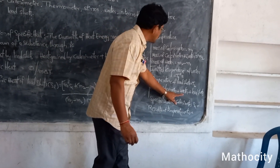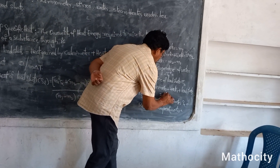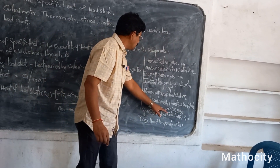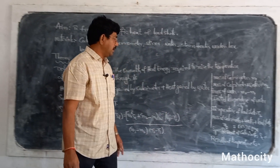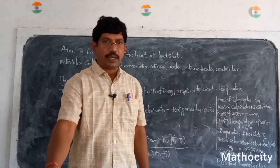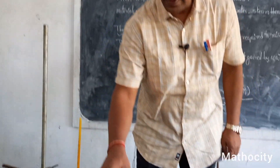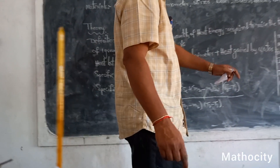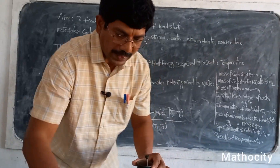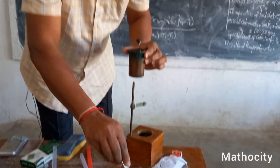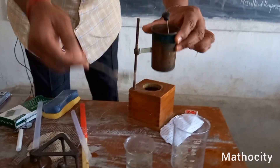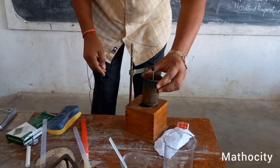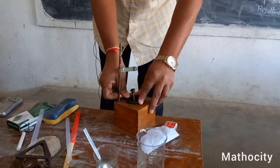The mass of the calorimeter plus water plus lead shots, M3, is equal to 130.38 grams. Now the water is boiling — the temperature is 100 degrees, so the temperature of the lead shots, T2, is equal to 100 degrees. I am now transferring the lead shots into the calorimeter. I transferred the lead shots into the calorimeter and kept the calorimeter inside the wooden box.